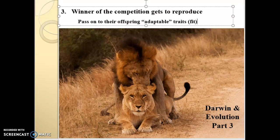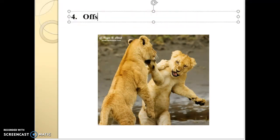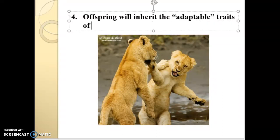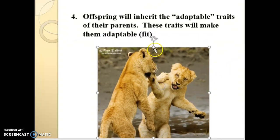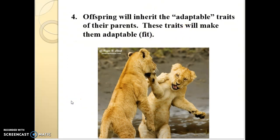Now, fit doesn't mean big and strong — it means successful. Component four of natural selection is that the offspring will inherit the adaptable traits of their parents. These traits will make those offspring more adaptable or fit. They're going to be able to compete better because they have the genes from mom and dad, which made mom and dad successful. You pass this on through the process of meiosis, genetics, and reproduction.